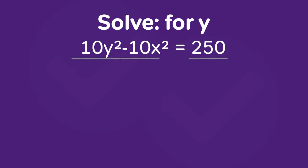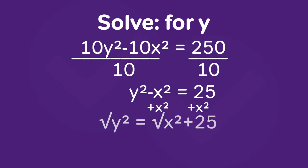First they're dividing by 10 on either side which is good to simplify the problem. So then they end up with y² - x² = 25. Then they add x² to both sides to eliminate and get y by itself on one side. Then they get y² = x² + 25 and they take the square root of all of it to end up with y = x + 5.